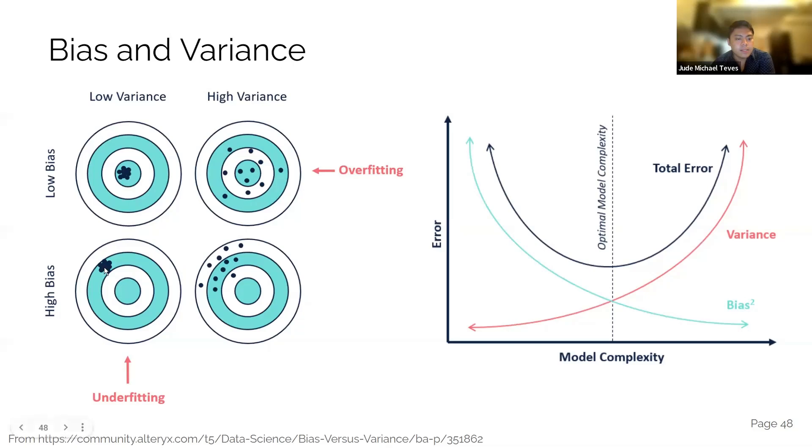For high bias and low variance, it's this. You're very consistent. It's really low variance, but you're really just way off to your target. And then the worst case scenario, high bias, high variance. It's really a bad model.